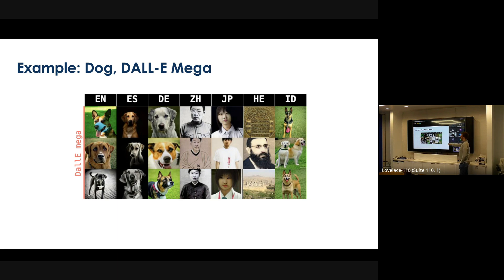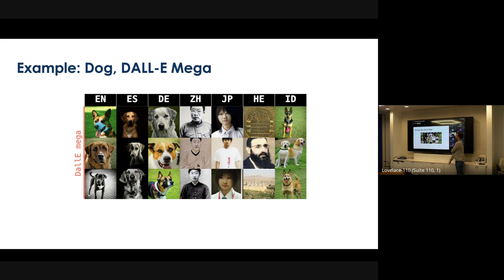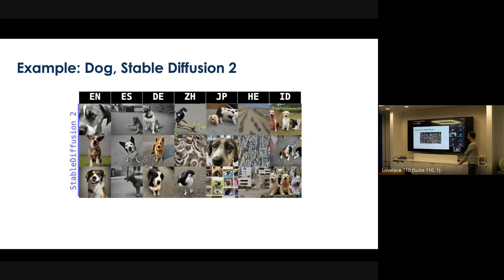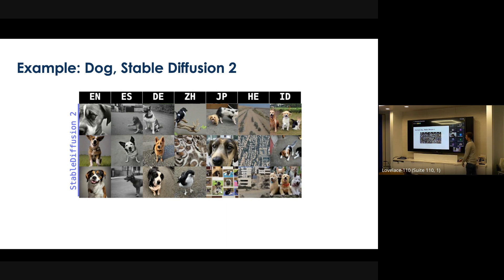Here are examples of 'dog' as generated by Dali Mega. We see that English, Spanish, German, and Indonesian are clearly known by this model, at least with respect to the concept 'dog.' But in Japanese, we once again see a collision with pictures of people, and in Chinese as well. Whereas in Hebrew, it's just generating random images — not colliding with any particular concept. Similarly, when we test Stable Diffusion, it successfully generates pictures of dogs in English, Spanish, German, and Indonesian, but now with some inconsistent success in Japanese, and still failing in Chinese and Hebrew.